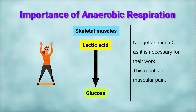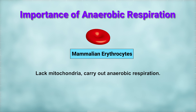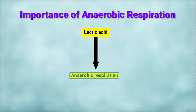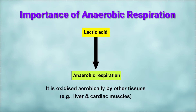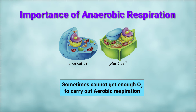This results in muscular pain. In mammalian erythrocytes, which lack mitochondria, anaerobic respiration is carried out. Lactic acid is produced anaerobically and is oxidized aerobically by other tissues such as the liver and cardiac muscles. Sometimes animal and plant cells cannot get enough oxygen to carry out aerobic respiration but still need to obtain energy to stay alive, so they use an emergency system — anaerobic respiration.